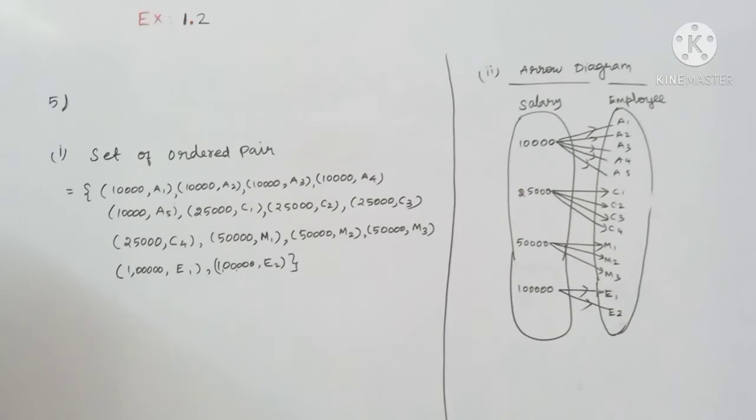C1, C2, C3, and C4 are clerks. The salary is 25,000. Then the manager's salary is 50,000. Then the executive officer's salary is 1,000,000.